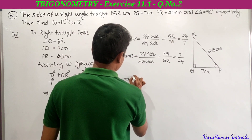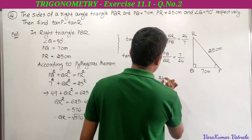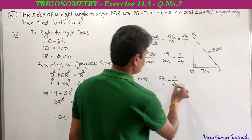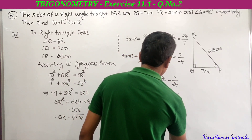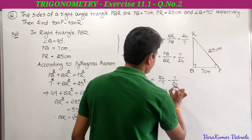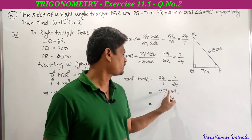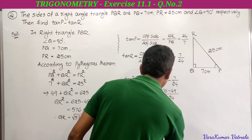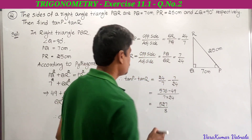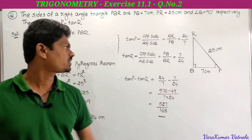Therefore, tan P minus tan R equals 24 by 7 minus 7 by 24. Taking LCM as 7 into 24, we get: (24 × 24 − 7 × 7) divided by 168. That is 576 minus 49 equals 527. So tan P minus tan R equals 527 divided by 168.